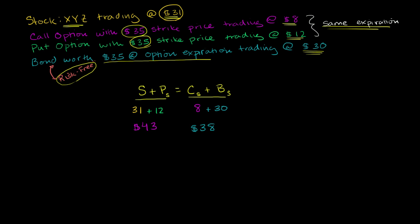So even though they have the exact same payoff at option expiration, the call plus the bond is cheaper than the stock plus the put. You have an arbitrage opportunity - an opportunity to make profit from a discrepancy in price between two things that are essentially equal.